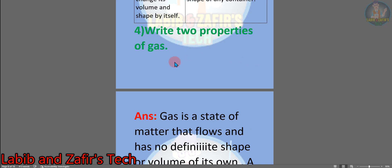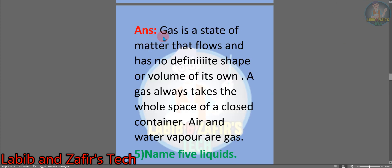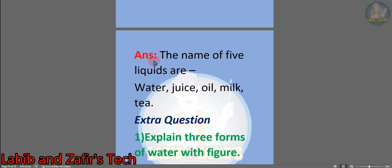Number 4: write two properties of gas. Answer: gas is a state of matter that flows and has no definite shape or volume of its own. A gas always takes the whole space of a closed container. Air and water vapor are gas. Number 5: name 5 liquids. Answer: the names of 5 liquids are water, juice, oil, milk, and tea.